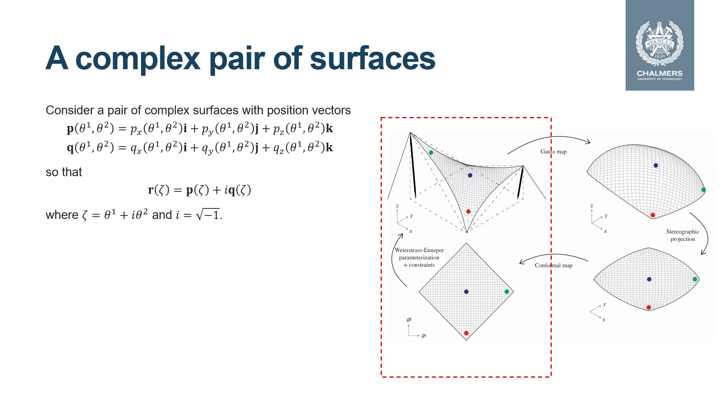However, without imposing any constraints on this mapping, the minimal surface will in general not have coordinates following principal curvature directions nor asymptotic directions. The pair of surfaces p and q share the same unit normal and therefore the same Gauss map, and this is what we have used to construct the constraints that we need.